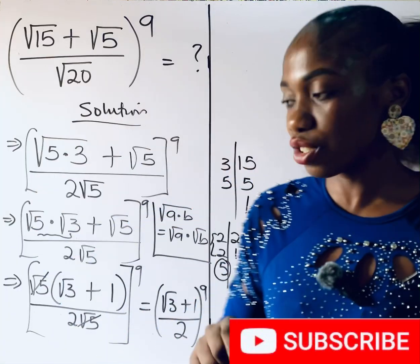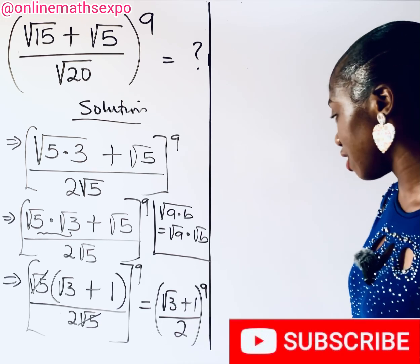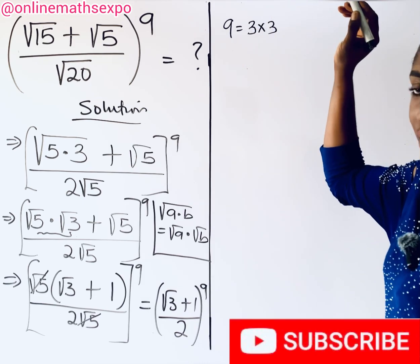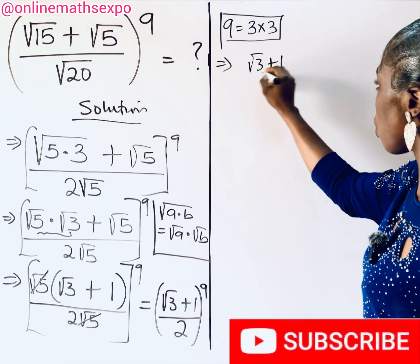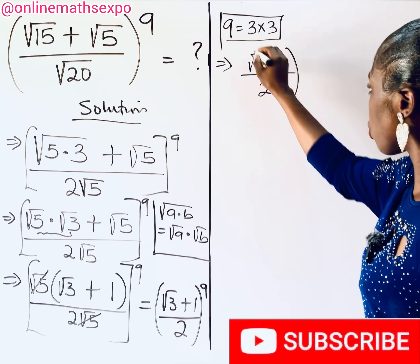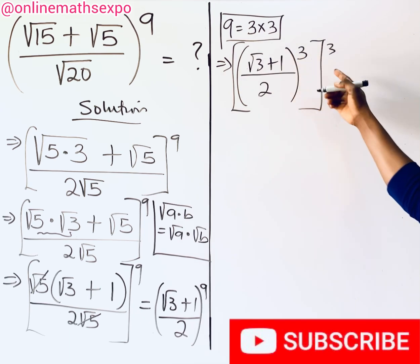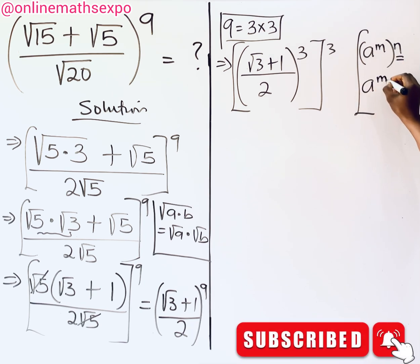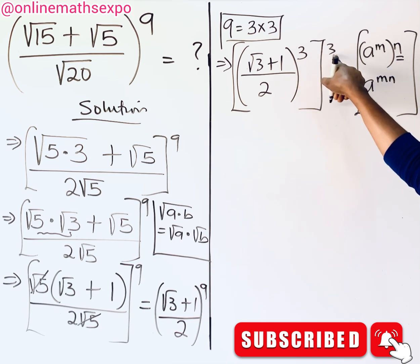We have now reduced the inside. For the outside, note that 9 = 3 × 3. So we can rewrite the expression as ((√3 + 1) / 2) raised to the power of 3, then raised to the power of 3 again. This is valid because, by the exponent rule, (a^n)^m = a^(nm), and 3 × 3 = 9, so we have not changed anything.